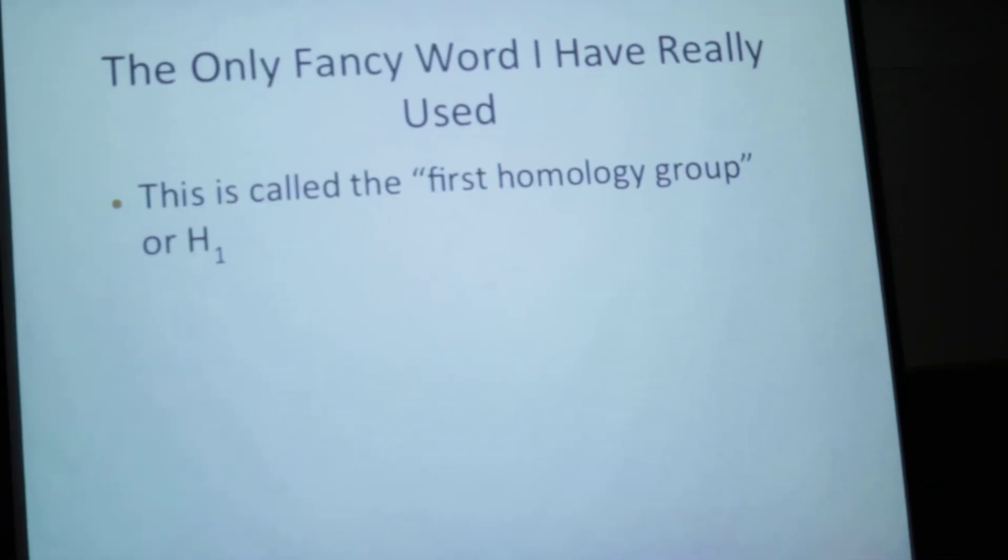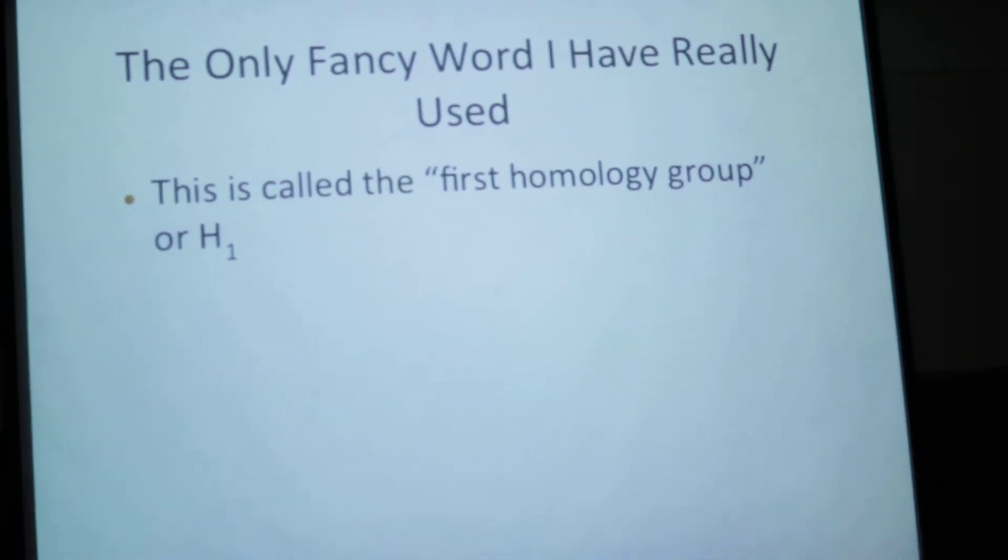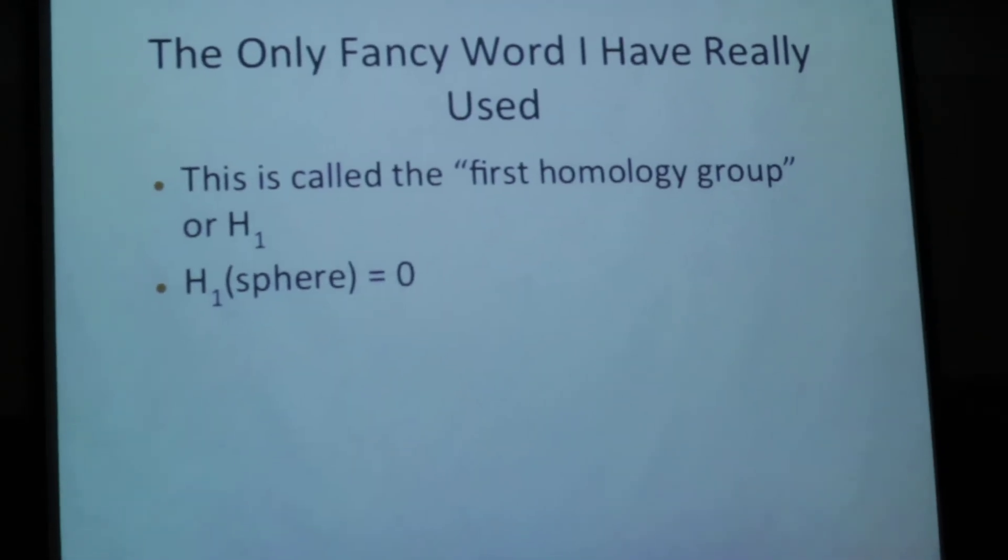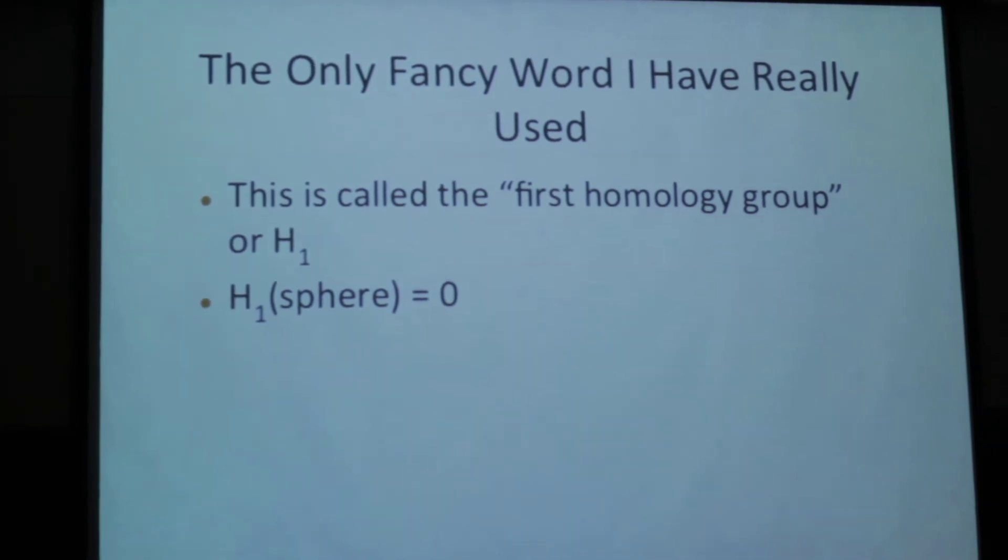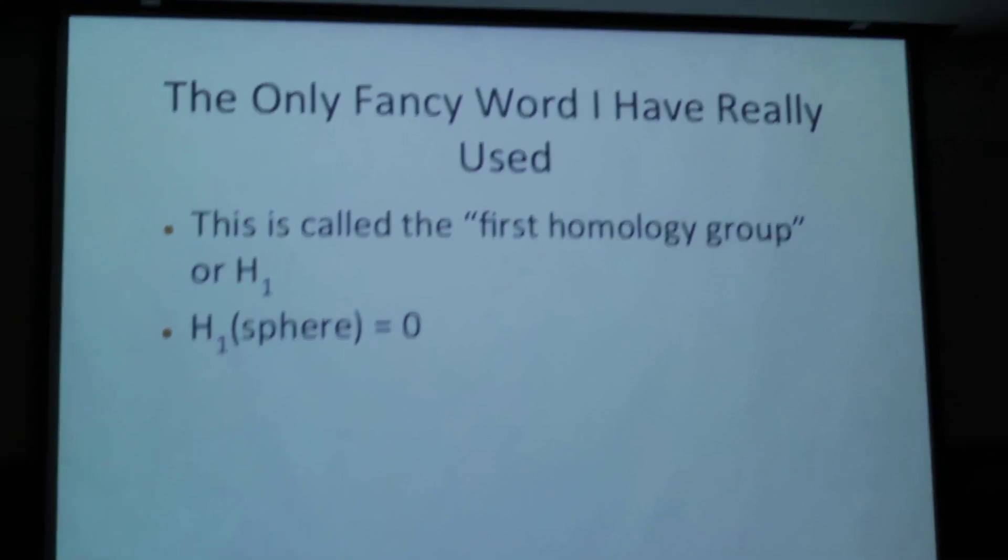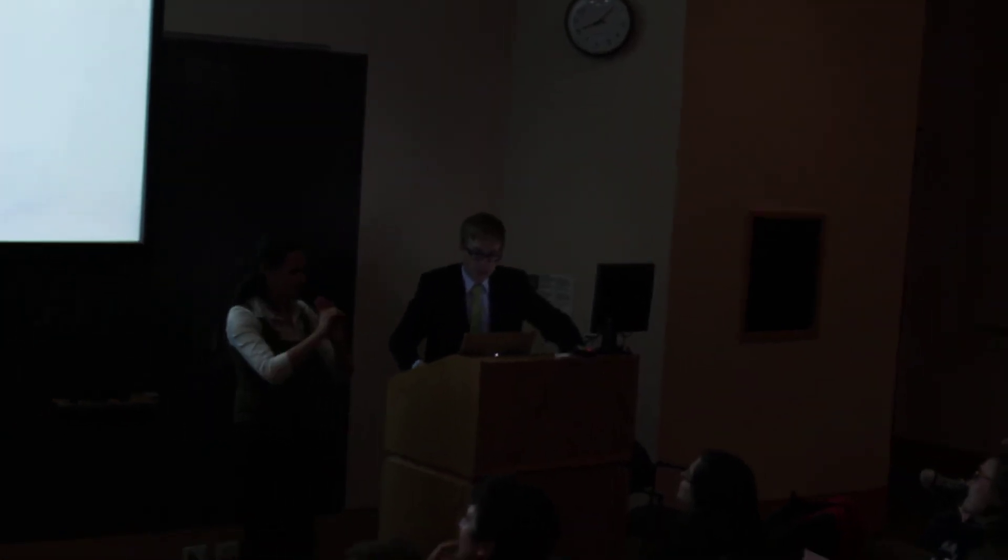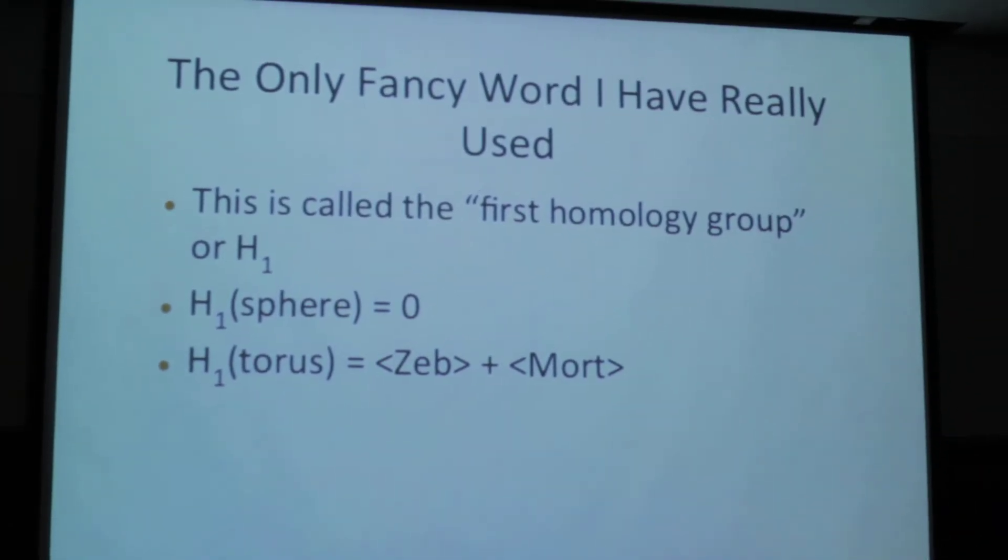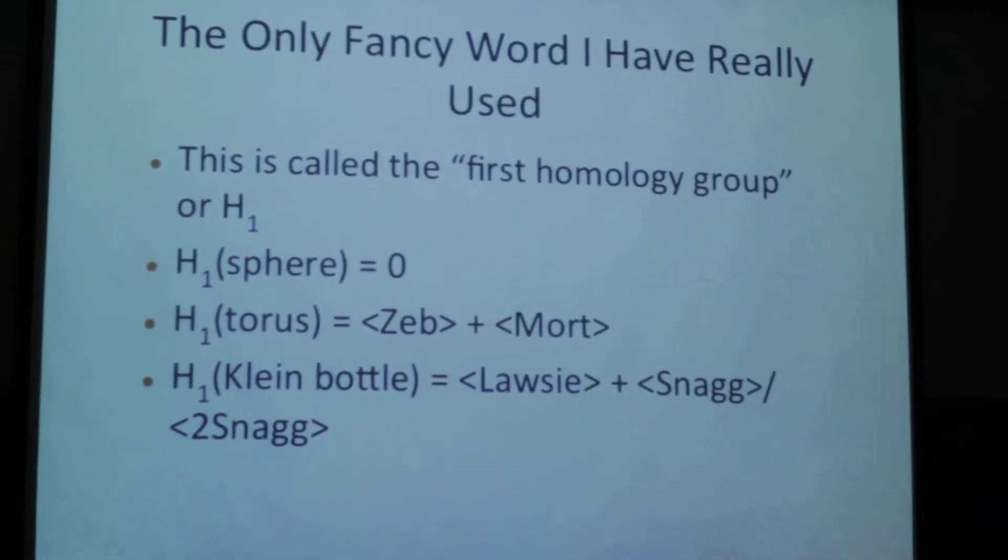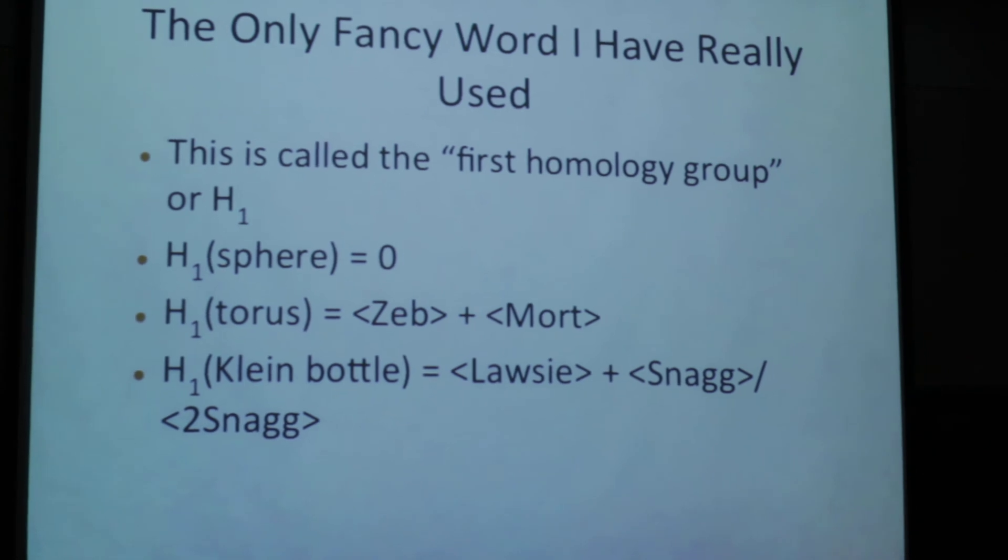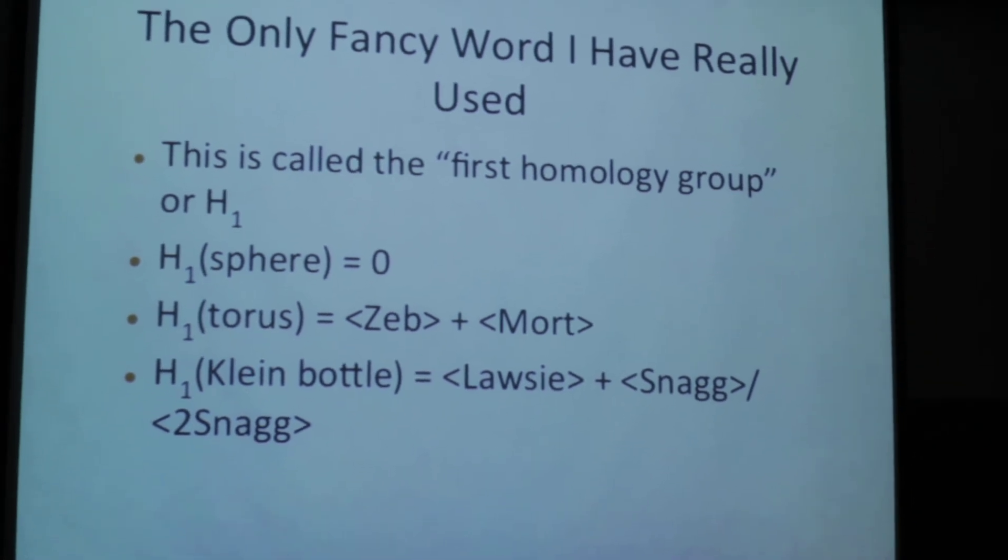And so now I come to the only fancy word I've really used in this presentation. This is called the first homology group, or H1. So H1 of a sphere, as we saw, is equal to zero, because Bob, Zarathustra, et cetera, they were all equal to zero. H1 of the torus is all the multiples of Zev plus all the multiples of Mort. Those angled brackets just mean Zev, 2 times Zev, minus Zev, et cetera. And H1 of the Klein bottle is Lossy plus Snag, but divided by 2 times Snag, because 2 times Snag here is equal to zero. And so we've used homology to prove that the torus and the Klein bottle are different.